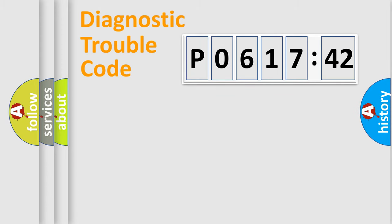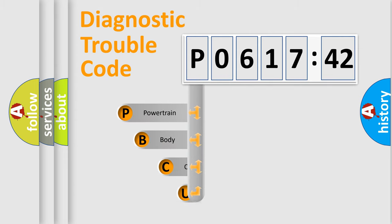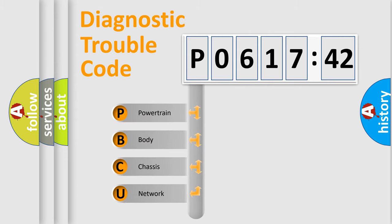We divide the electric system of automobile into four basic units: Powertrain, Body, Chassis, Network. This distribution is defined in the first character code.